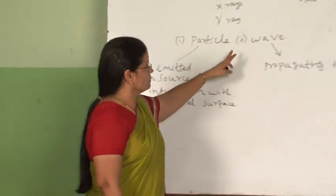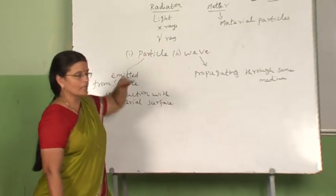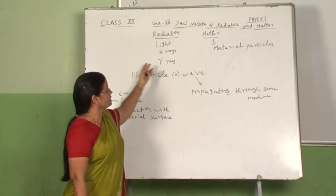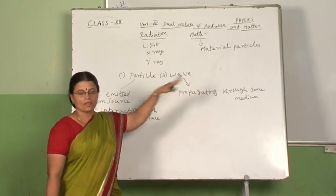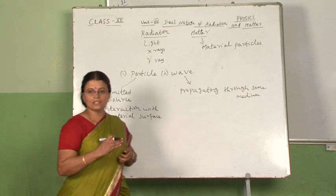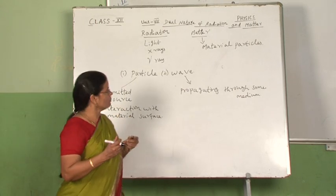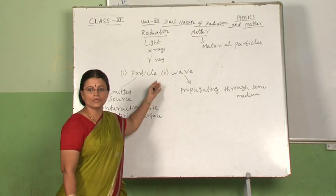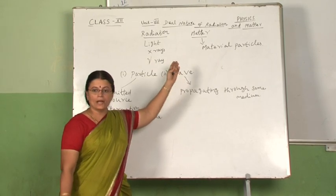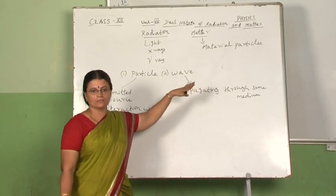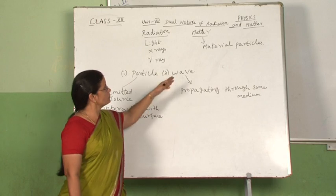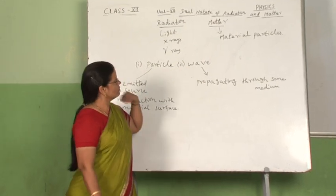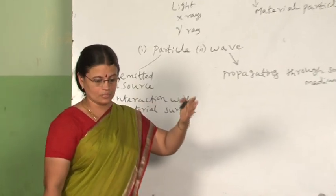Everything in the universe exists as radiation or matter, and we also know that nature loves symmetry. So de Broglie argued that when radiation has dual nature, similarly matter also should have dual nature. He proposed the dualistic characteristic of matter, and we will see that in the later course.